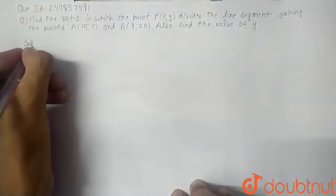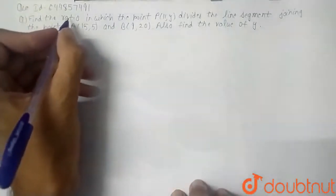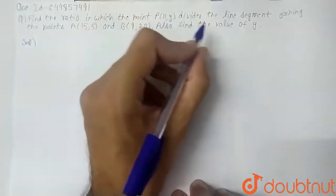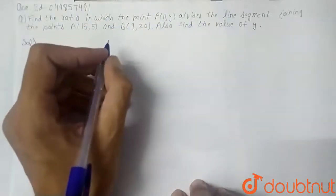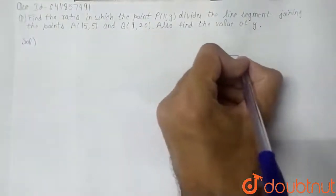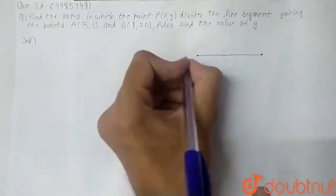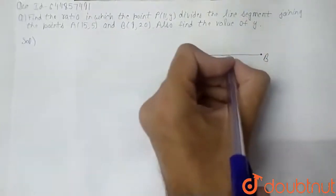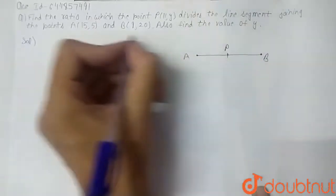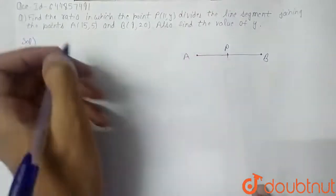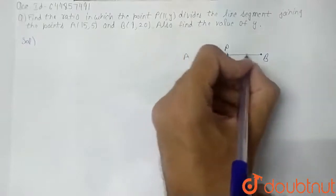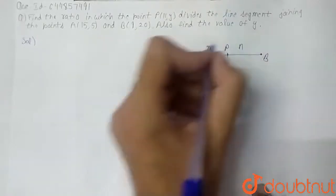In this question we have to find the ratio in which point P divides the line segment AB. Let us suppose we have a line segment AB, and here point P divides this line segment in some ratio. Let us suppose point P divides the line segment in the ratio m : n.